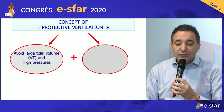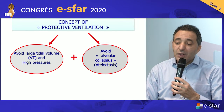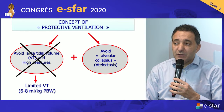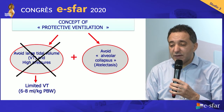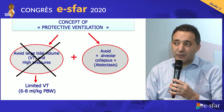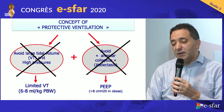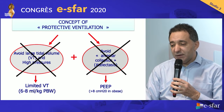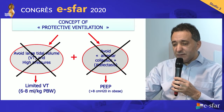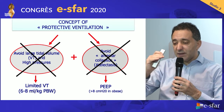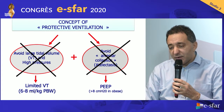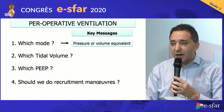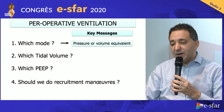The concept is to avoid large tidal volumes and high pressures during surgery, and to avoid alveolar collapse to prevent atelectasis — first by limiting tidal volume. We now have strong data suggesting 6 to 8 mL per kilogram of predicted body weight, and using PEEP above 8 to 10 cmH₂O, especially in obese patients. If you decrease tidal volume, you should increase PEEP to maintain similar intrathoracic pressure. The mode — pressure or volume — are equivalent if similar airway pressure is applied.